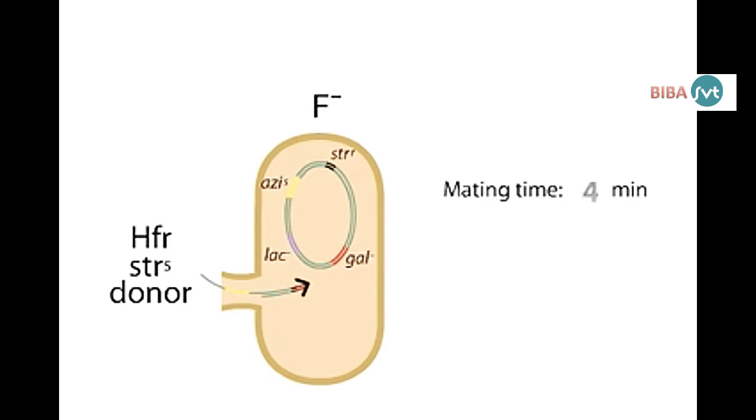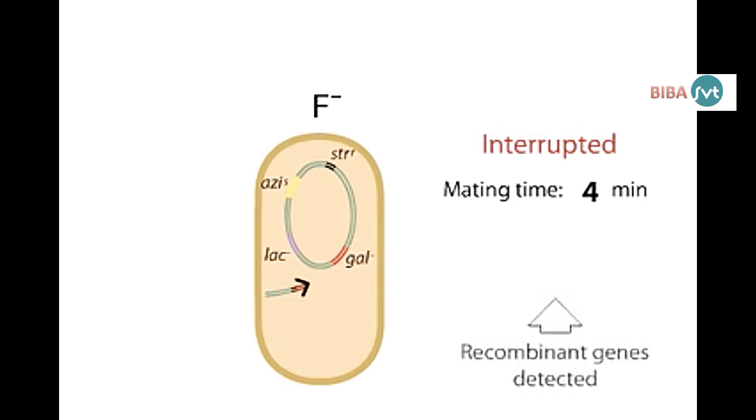After four minutes, we interrupt mating, add streptomycin, and test for recombinants among F- survivors. None are found.